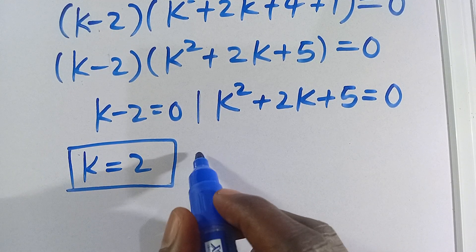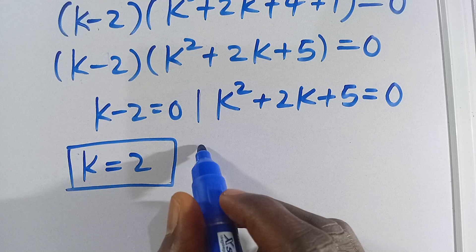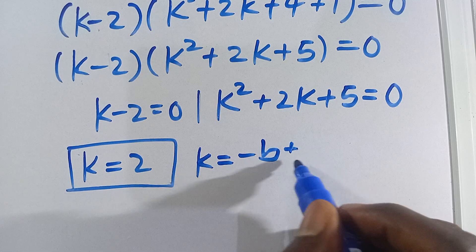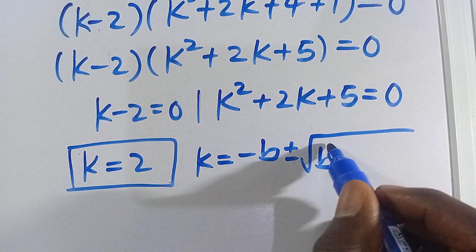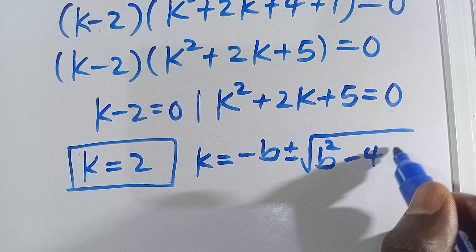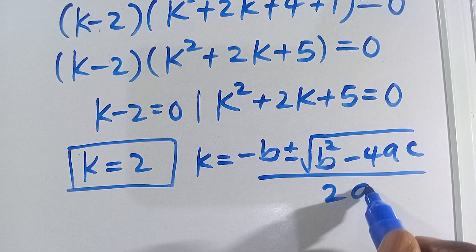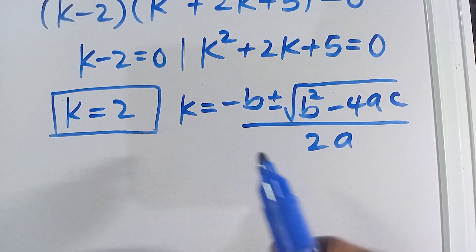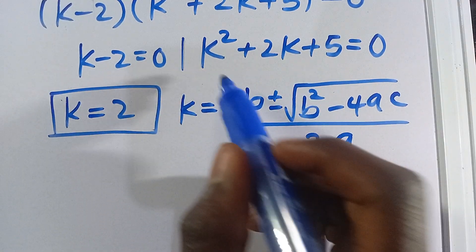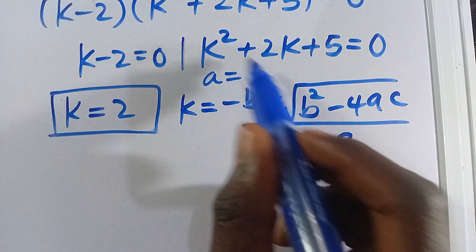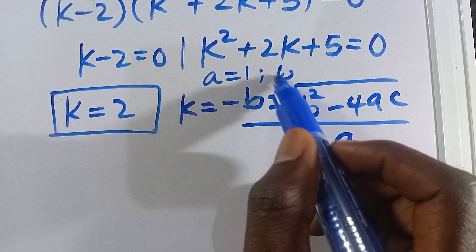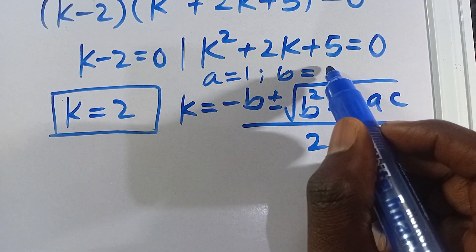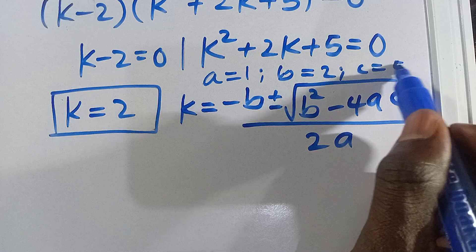From k minus 2 equals 0, we get k equals 2. For the quadratic k² plus 2k plus 5 equals 0, let's use the quadratic formula: k equals negative b plus or minus the square root of b² minus 4ac, divided by 2a. Here a equals 1, b equals 2, and c equals 5.